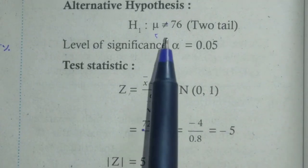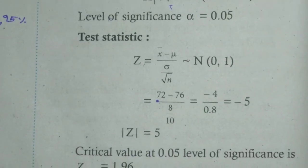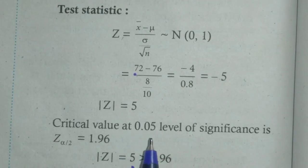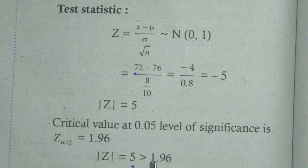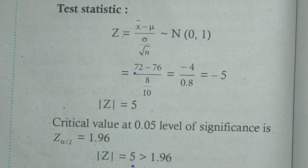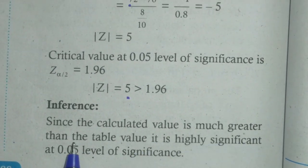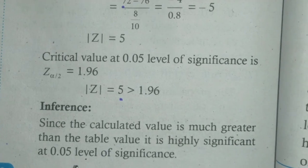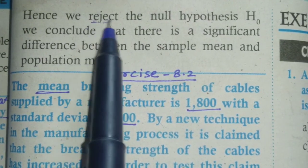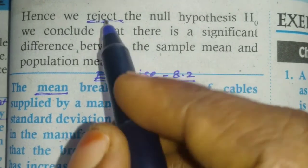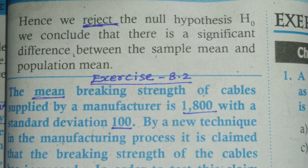Now we apply the test statistics formula. Applying the values and simplifying, the calculated Z value is 5. The critical value at the 0.05 level is 1.96 from the table. Since the calculated value of 5 is very high compared to 1.96, at the 0.05 level of significance the null hypothesis is rejected. Therefore, there is a significant difference between the state scores and the national scores. Thank you.